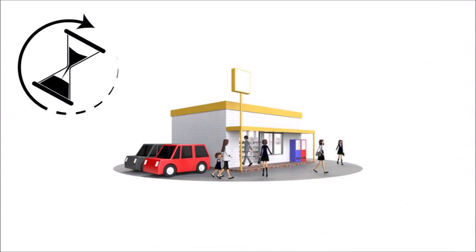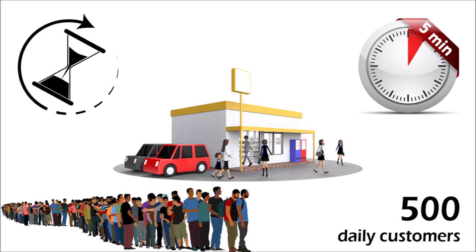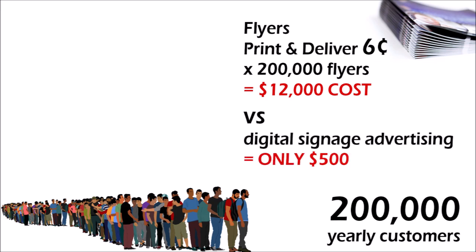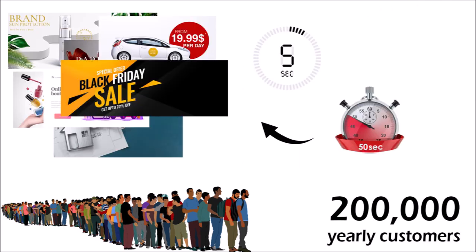The average time it takes a customer to walk in, purchase an item, and leave is about five minutes, so the loop time had to be short. Ed knew that the convenience store had an average of 500 daily customers, which is almost 200,000 people walking in yearly. He also knew that the average cost to print and deliver a flyer is 6 cents, which would cost $12,000 to deliver flyers to 200,000 people. Because this was Ed's first time setting up a digital signage location, he decided to only charge a modest $500 per year per ad spot, just to sell the ad spots faster. He decided to place only 10 ads of 5 seconds each for a 50-second loop time, so everyone would see all 10 ads within a minute while waiting in line at the cash.